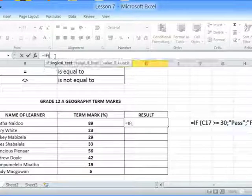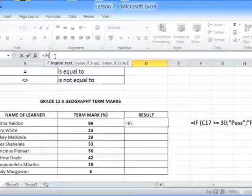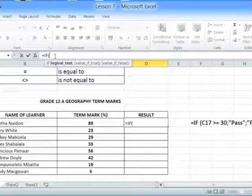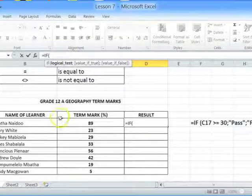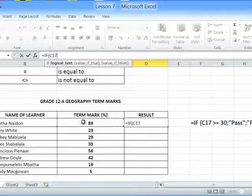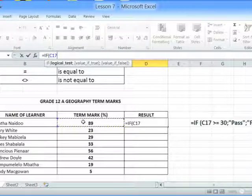Equal to IF, and then we have our condition. If the learner passed, they should have obtained a percentage of greater than or equal to 30 percent. That term mark is contained in cell C17, so if C17 is greater than or equal to 30...